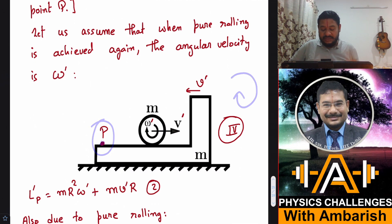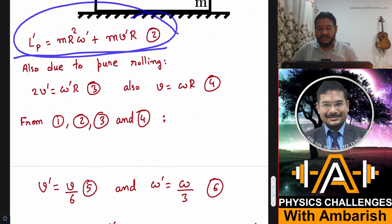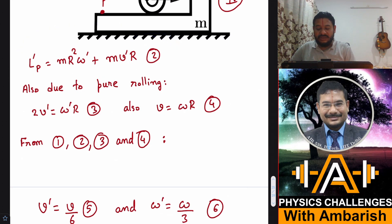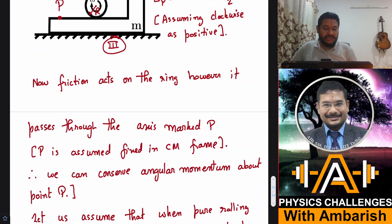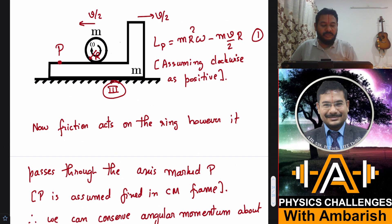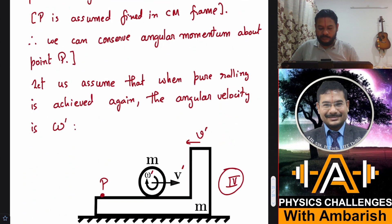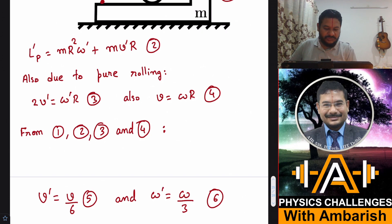So what is the angular momentum about point P once again, taking clockwise as positive? The new angular momentum is mR²ω' plus mv'R. Remember I'm writing the angular momentum of the ring alone. This angular momentum must be equal to the earlier angular momentum. So I have this equation, angular momentum conservation equation. The RHS of this is equal to RHS of this one. Let me copy this and paste it.